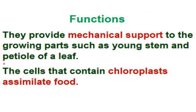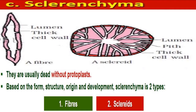The function of colenchyma is to provide mechanical support to the growing parts such as the young stem and petiole of a leaf. The cells that contain chloroplasts also assimilate food, so they help in assimilation of food as well.